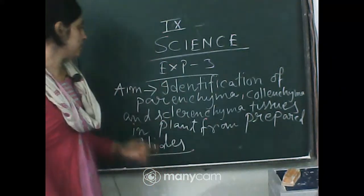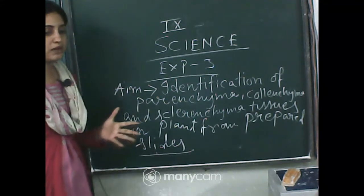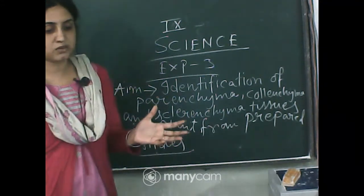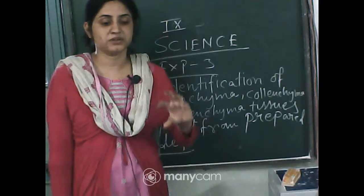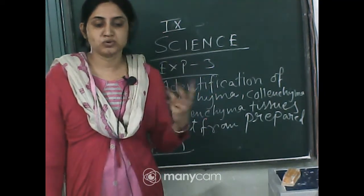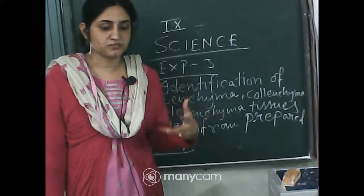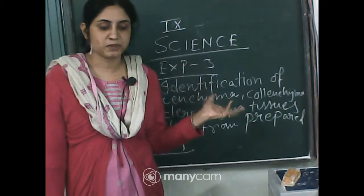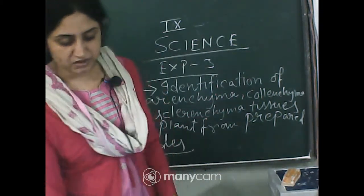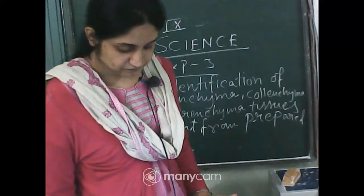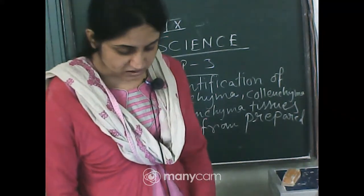First, the identification of parenchyma. You know how it looks from your book — you can also read that. The summary: just write down 2 or 3 observations, procedure, observation, and the characteristics of this particular tissue, and then the specifications. Diagrams are also a must.